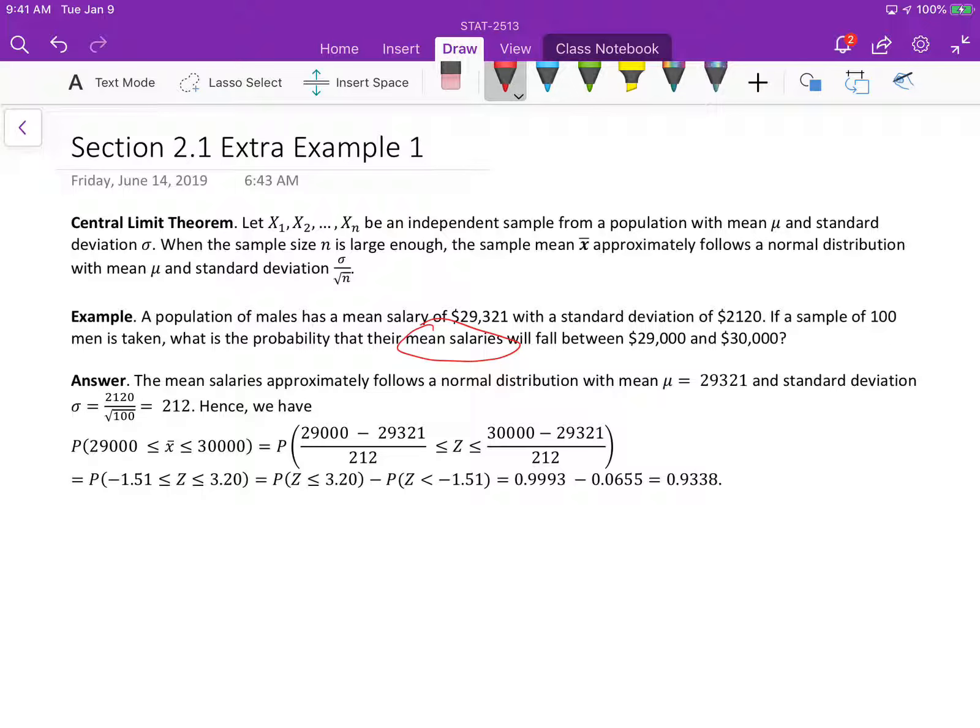According to Central Limit Theorem, the mean will be the same here. Basically the mean does not change. But the standard deviation is reduced, right? The standard deviation of the salary is this one, but the standard deviation of the mean salary will be divided by square root n. In this case, because a sample of 100 men is taken,